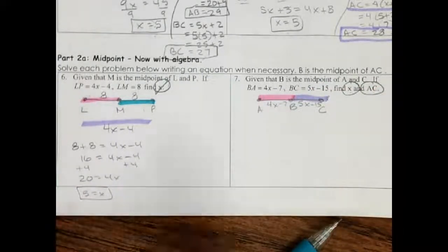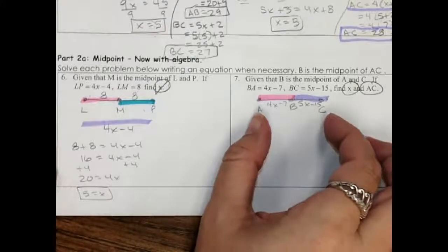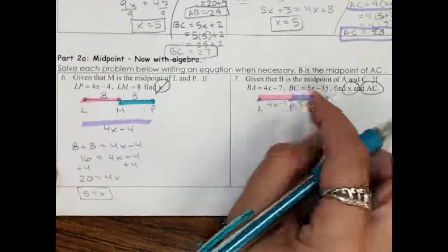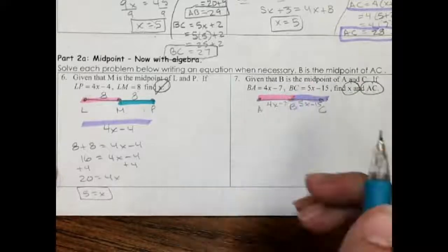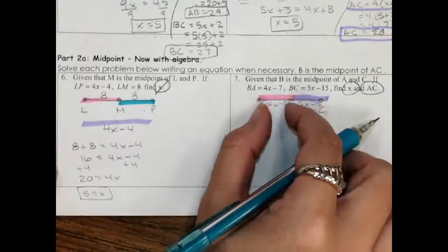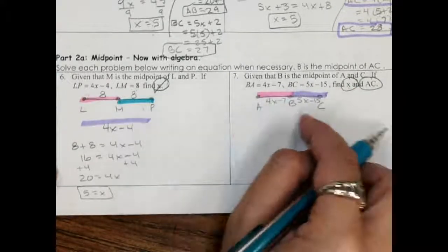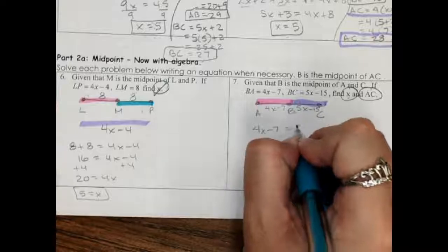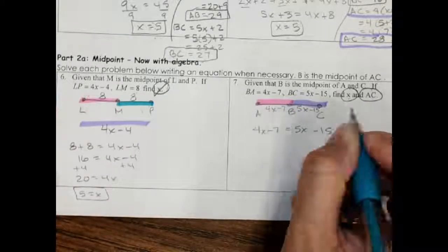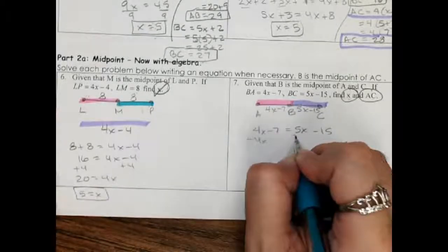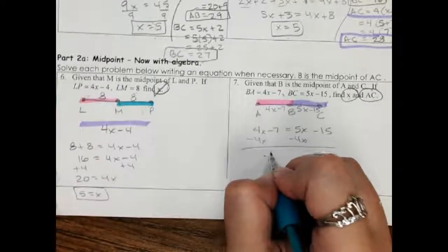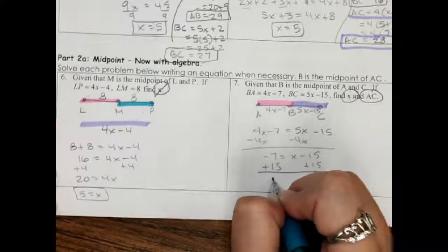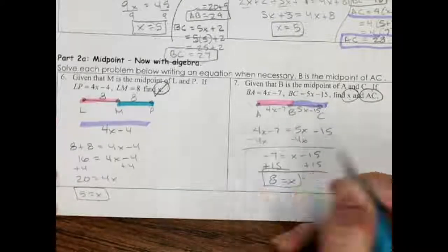Now this time, I don't know how long the whole thing is. But remember with midpoint, the two halves are the same because this is exactly in the middle. So on midpoint, I sometimes need to know that this side is equal to that side if I don't know the whole part. So 4x minus 7 equals 5x minus 15. Now just subtract the 4x. Add the 15.